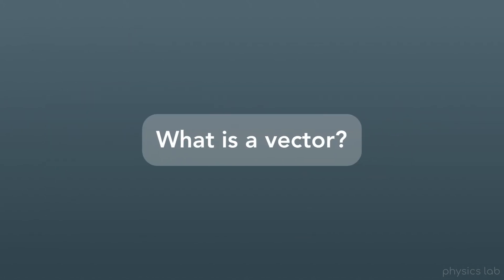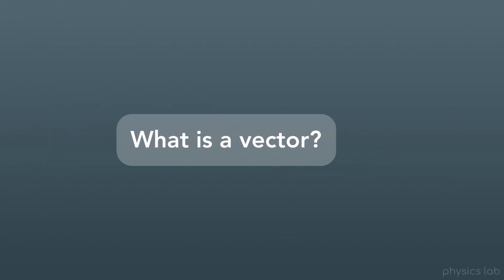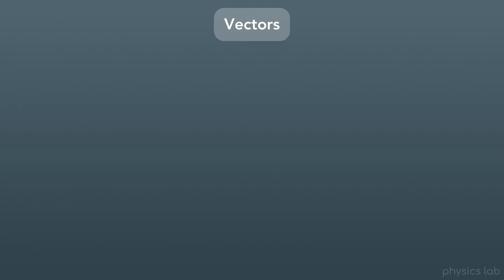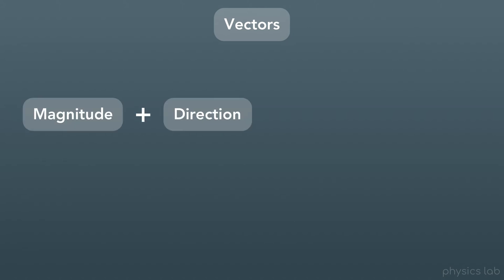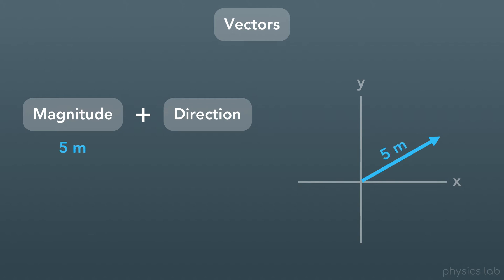So first, what is a vector? A vector is something that has both a magnitude and a direction. We usually represent a vector using an arrow, and the length of the arrow is the vector's magnitude. Here we have this blue vector with a magnitude of 5 meters and a direction of 30 degrees above the positive x-axis.